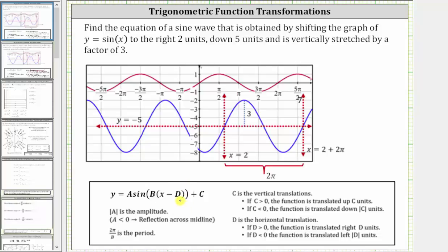d indicates a horizontal or phase shift, where if d is positive, the graph is shifted right d units, and if d is negative, the graph is shifted left.